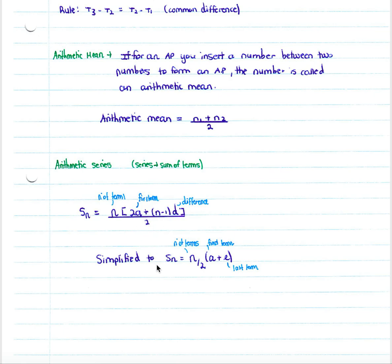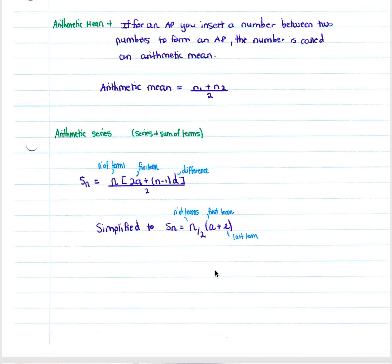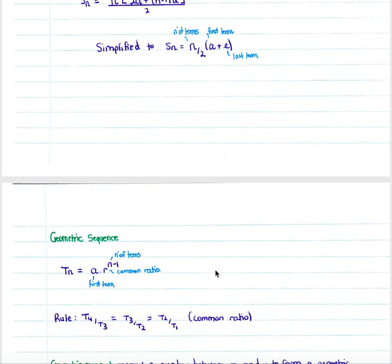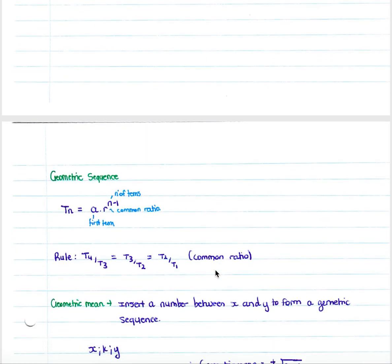This can be simplified to Sn equals n divided by 2 times 2a — the first term — plus l, being the last term. However, this simplified form is not given on the formula sheet and you would have to learn it. It only works when certain information is given, whereas the previous formula always works.